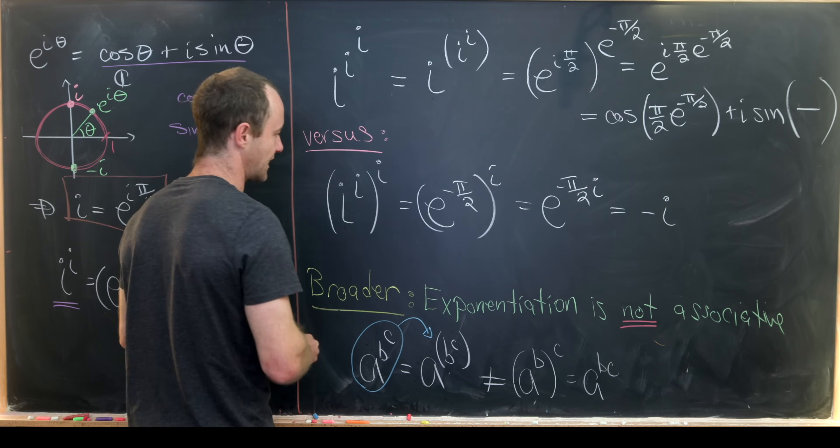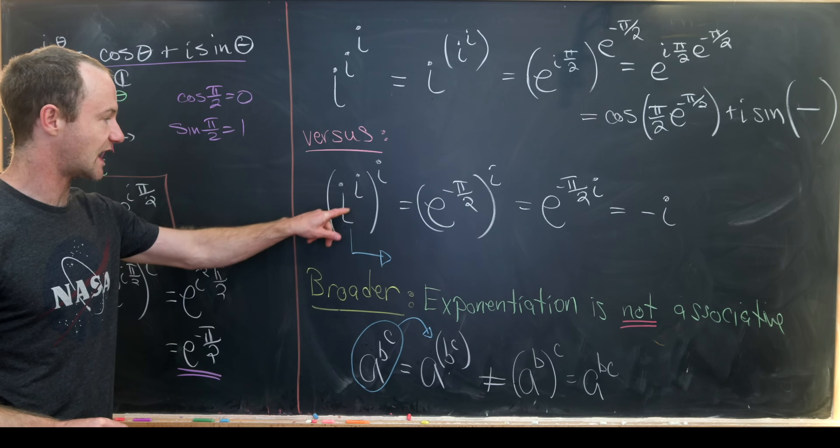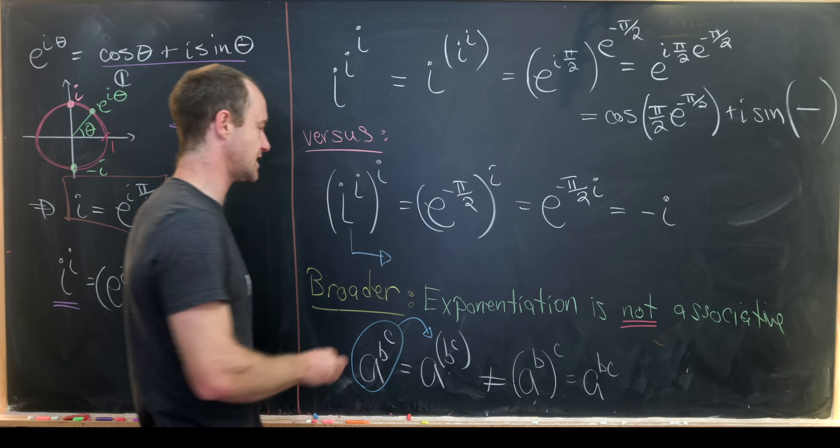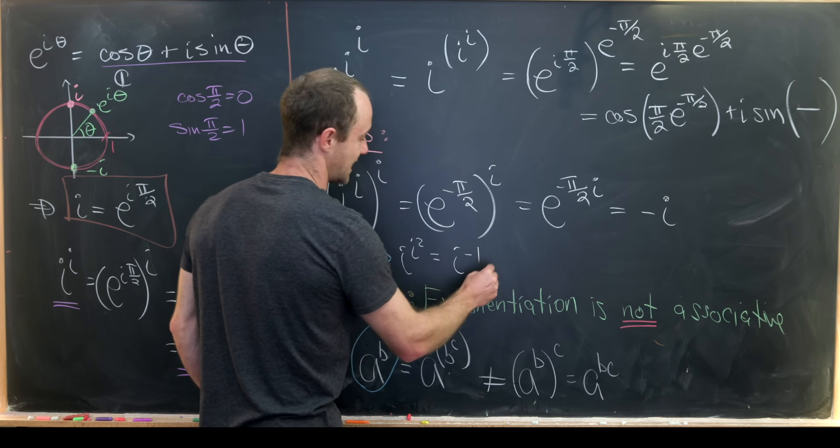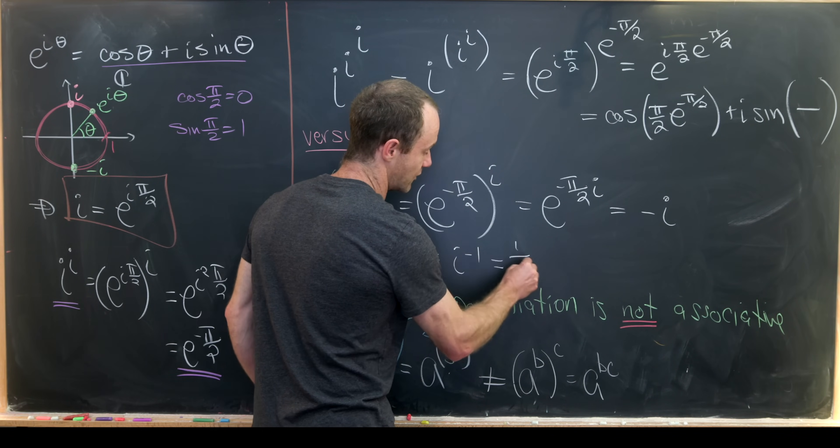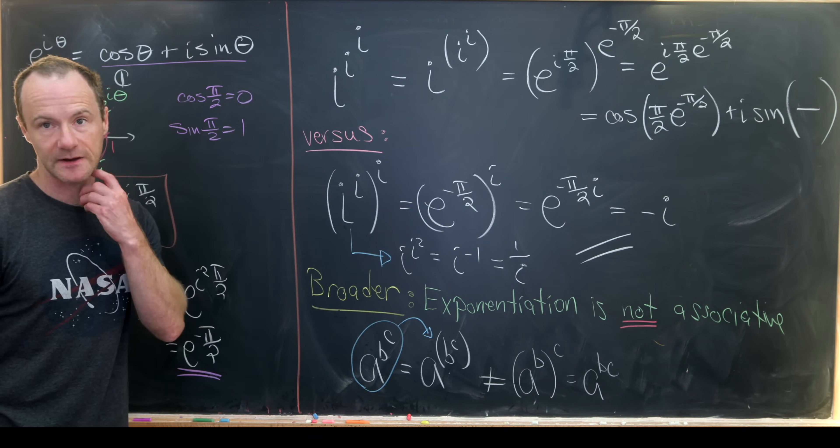But if we were to calculate this a different way, you would notice that we get the same thing. So this is i to the i to the i. Using this exponent rule down here, that's i to the i squared, which is i to the minus one, which is one over i, but that's also equal to minus i.